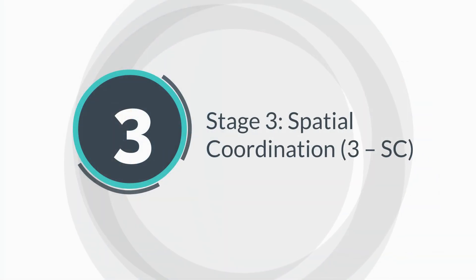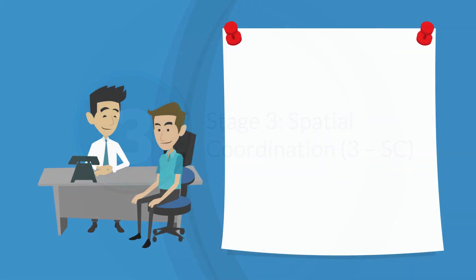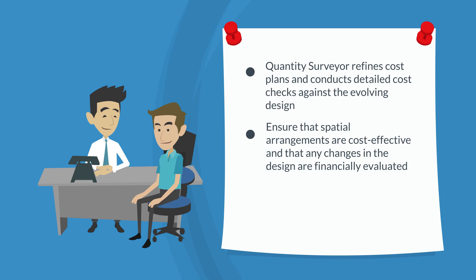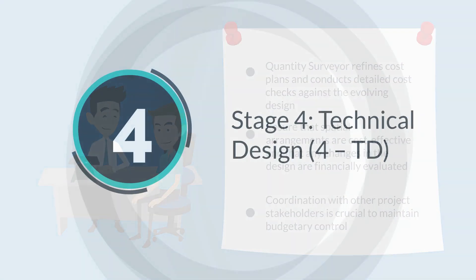Stage 3, Spatial Coordination. At this stage, the Quantity Surveyor refines cost plans and conducts detailed cost checks against the evolving design. They ensure that spatial arrangements are cost effective and that any changes in the design are financially evaluated. Coordination with other project stakeholders is crucial to maintain budgetary control.